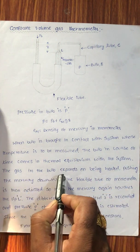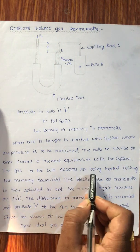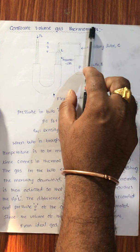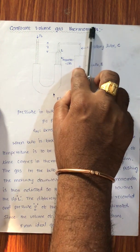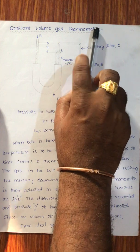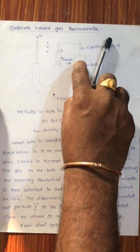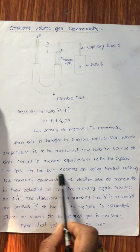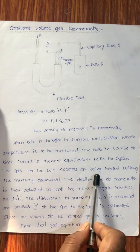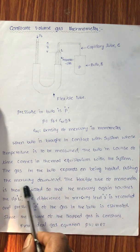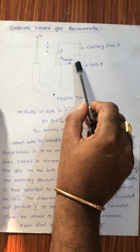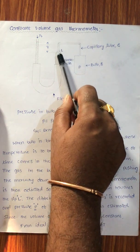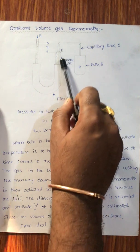The gas in the bulb expands on being heated. If the system is at a high temperature, heat is automatically transferred from the system to the bulb. So whatever gas is in the bulb, that gas is heated — it is taking heat from the system. So the gas in the bulb expands on being heated, pushing the mercury downward.